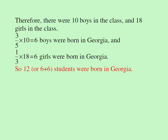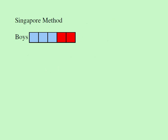Let's erase all this and take a look at the visual solution — we'll call it the Singapore method. I know that three-fifths of the boys were born in Georgia, so I shade three-fifths. That represents the Georgia boys.